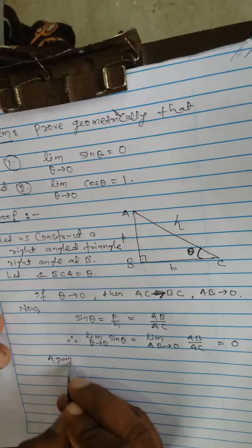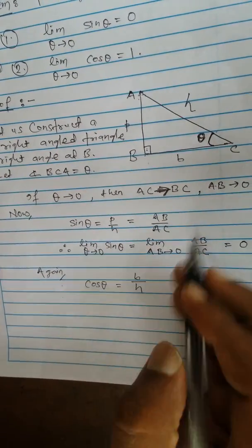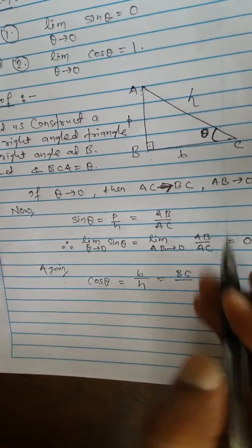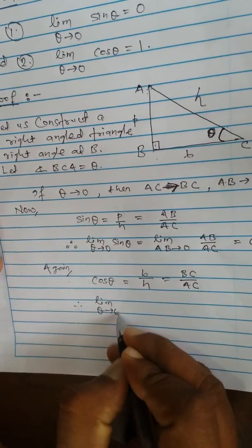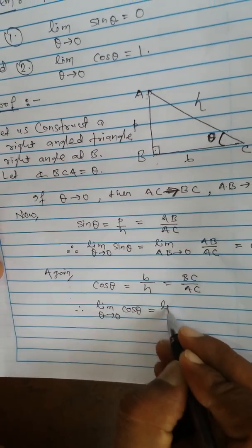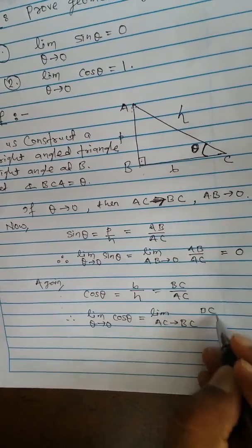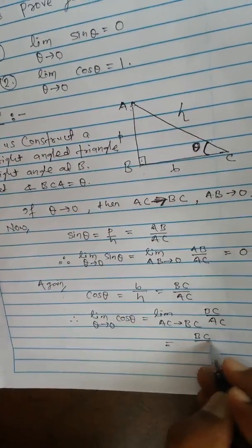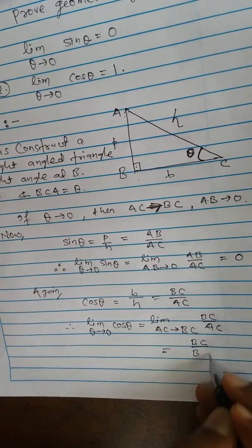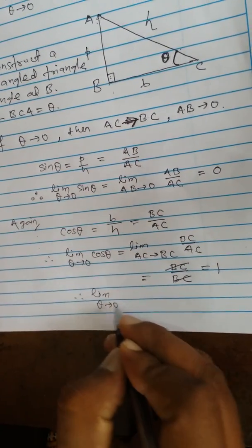Now for cosine theta: cos theta equals B over H, where B is BC and H is AC, the hypotenuse. Applying limit as theta tends to 0: cos theta equals BC over AC. As theta tends to 0, AC tends to BC, so we replace AC with BC in the denominator. We get BC over BC, which cancels to give 1. So we have proved that limit as theta tends to 0 of cos theta equals 1.